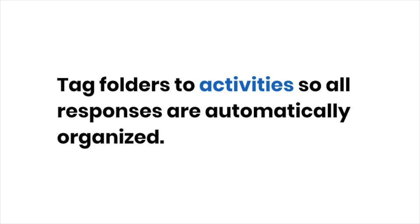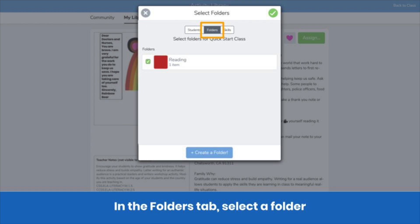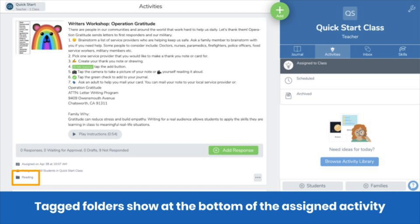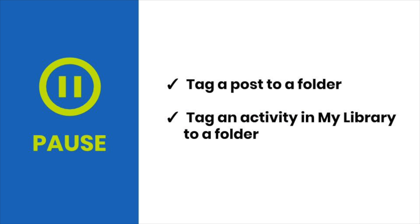Tagging posts one by one is time consuming. Here's how you can save some time. When you assign a Seesaw activity, you can tag a folder. Click Edit Students Folders Skills. In the Folders tab, select a folder you want all student responses to be automatically organized into. Remember, folders organize student posts in the journal. When you assign the activity, you'll see tagged folders down here. When students respond to the activity, their posts will automatically be tagged to the folder, which saves you a ton of time. Pause the video now and practice tagging posts and activities to folders.